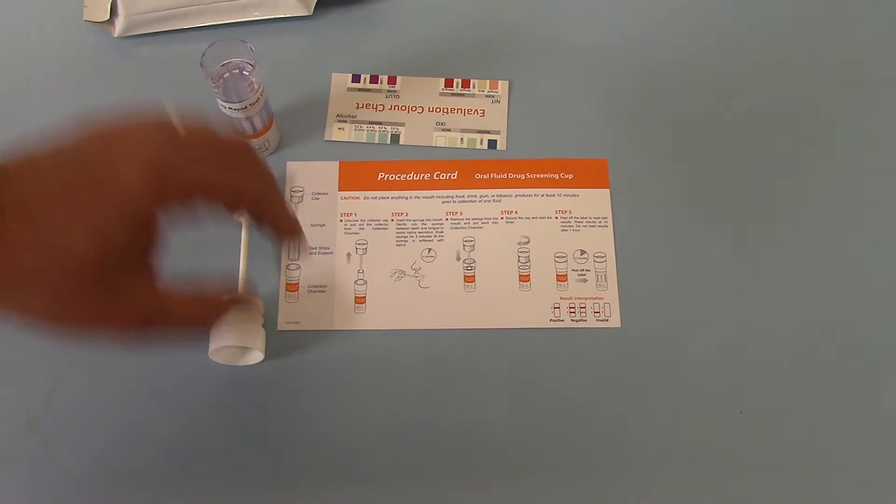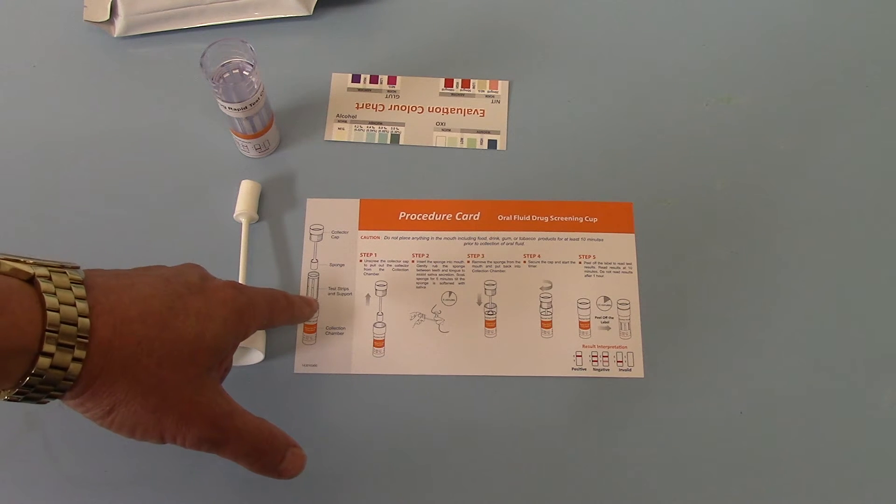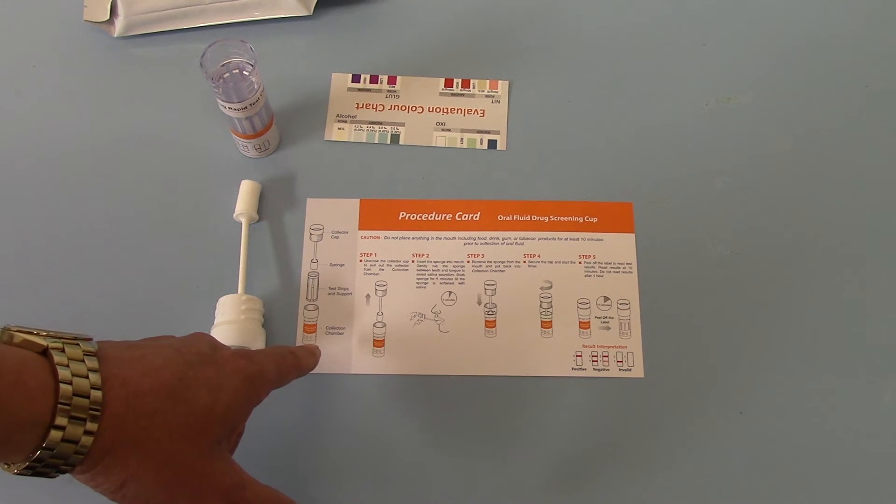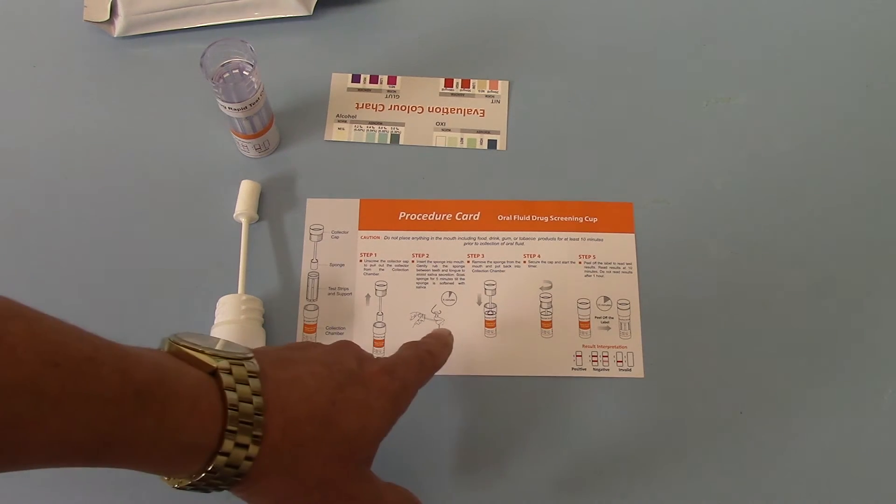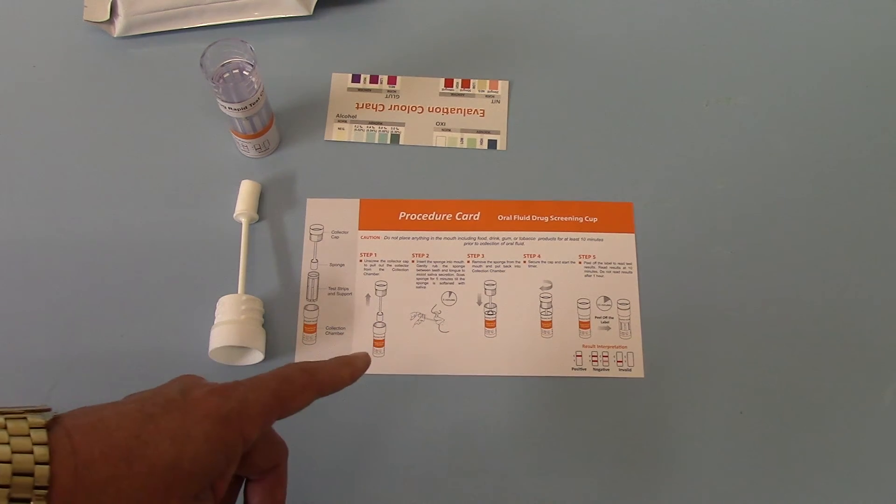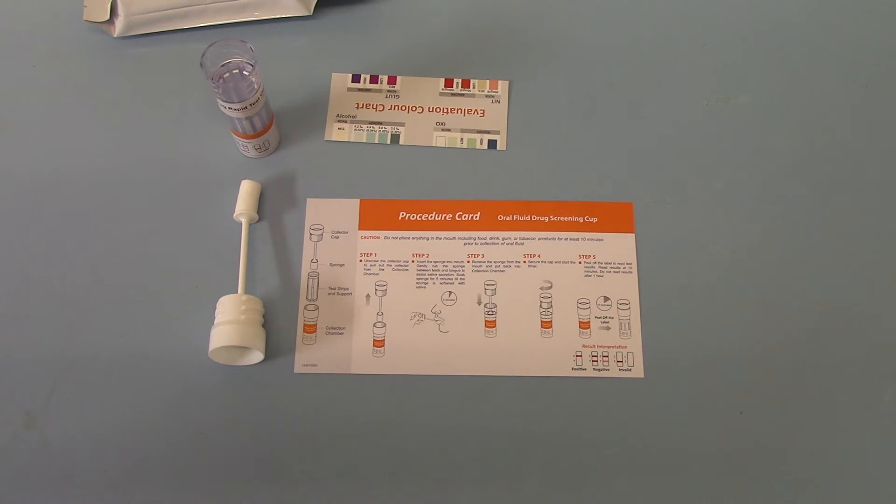The simple procedure card guides you in terms of the elements of this, the sponge collector, the transparent strips and support, and the collection chamber, how to unscrew, collect the sample, which will take between 4 and 5 minutes to completely saturate the swab, and a critical element of running this test correctly is the collection of an adequate 3 to 4 ml saliva sample on that swab.